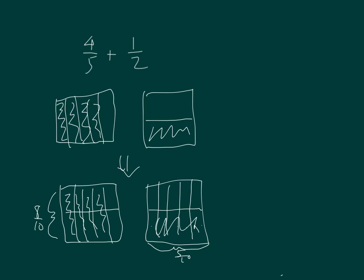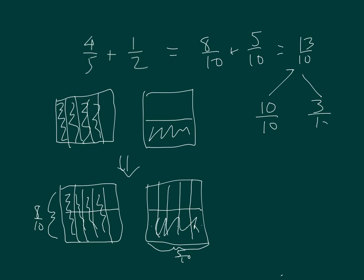So 4 fifths plus 1 half is equal to 8 tenths plus 5 tenths, which equals 13 tenths. 13 tenths I can rewrite as a mixed number — it breaks down into 10 tenths and 3 tenths, which is 1 and 3 tenths.